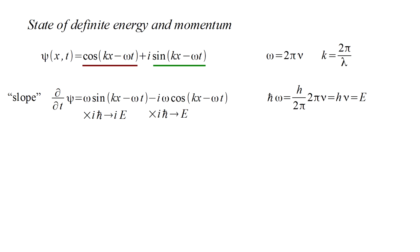If we multiply our slope through by I H bar, we end up with E times the cosine plus I E times the sine. And the final result is that I H bar times the slope of the wave function in time equals the energy times the wave function. As we've seen, this is a key term in the Schrodinger equation.